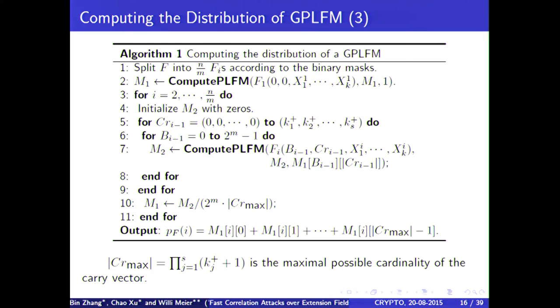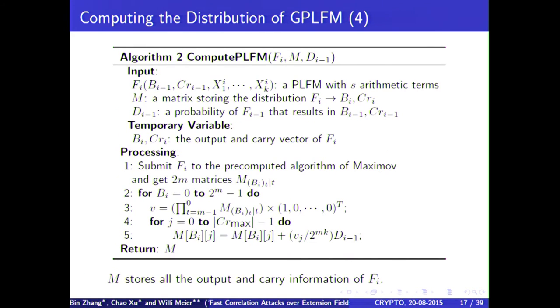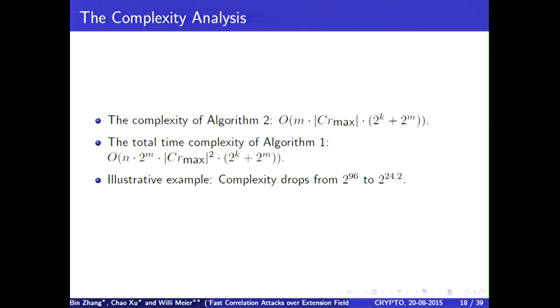I won't go into detail with the algorithm here. We can just say we have a triple loop, obviously. An important thing is that we have to call another algorithm within algorithm 1 here. And this algorithm 2, its aim is just to embed the algorithm by Maximov and Johansson in our setting, roughly. One can compute the complexities of both algorithms. I won't go into detail. We shall see some applications of them. But just to give an illustrative example here, the complexity drops from 2^96. If you do it just with trial and error, or exhaustive search, to 2^24. So, it's a dramatic reduction.